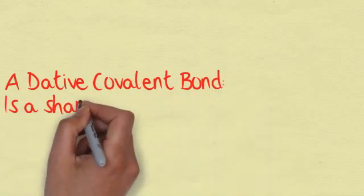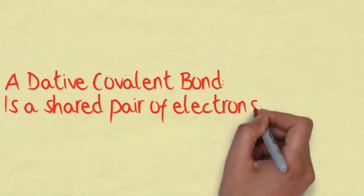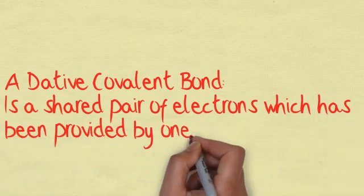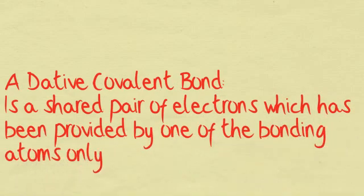A dative covalent bond is a shared pair of electrons which has been provided by one of the bonding atoms only. This is a common exam question.